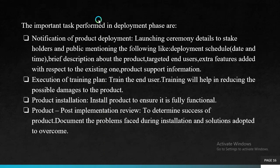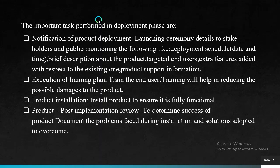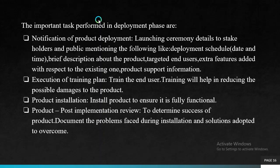The next task is execution of the training plan — training the end user. Proper training helps in reducing possible damages to the product as well as the operating person, including personal injuries and product malfunctioning due to inappropriate usage. User manuals help in understanding the product, its usage, and assessing its functionalities. Next is product installation — installing the product as per the installation document to ensure it is fully functional. Product post-implementation review is to determine the success of the product, document the problems faced during installation, and solutions adopted.